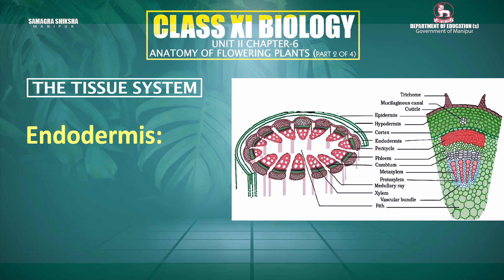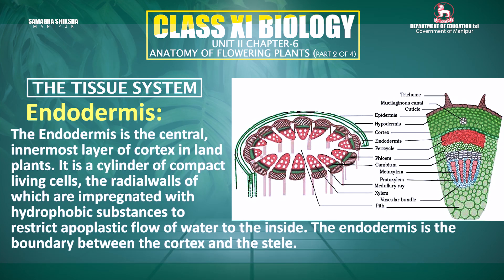After the cortex comes the endodermis. The endodermis is the innermost layer — a single layer of tissue. It is barrel-shaped. The tangential and radial walls of the endodermis have thickenings due to the deposition of suberin material, which makes the layer waterproof and impenetrable.